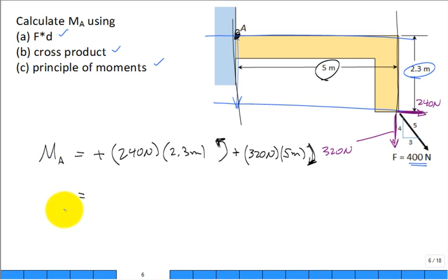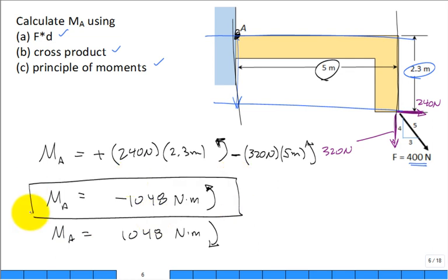Now you just have to figure out which way do you want to consider the positive direction. If you want to consider this as the positive direction, then you would take and switch that and put a negative sign right there. What do we get for our answer? Negative 1048 newton meter in the counterclockwise, or equally well 1048 newton meter in the clockwise. Either way, yeah.